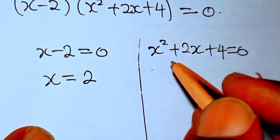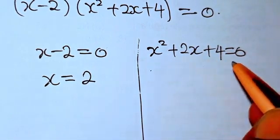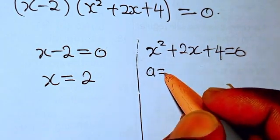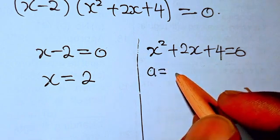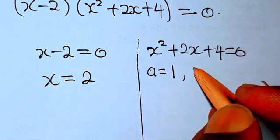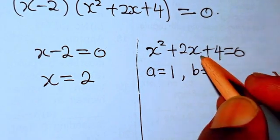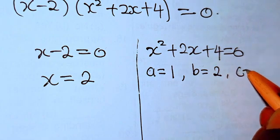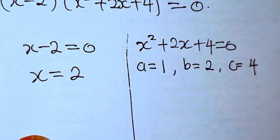For the quadratic equation x squared plus 2x plus 4 equals 0, we are going to use the quadratic formula to get the remaining values of x. Here a, the coefficient of x squared, is 1; b, the coefficient of x, is 2; and c, the constant term, is 4.